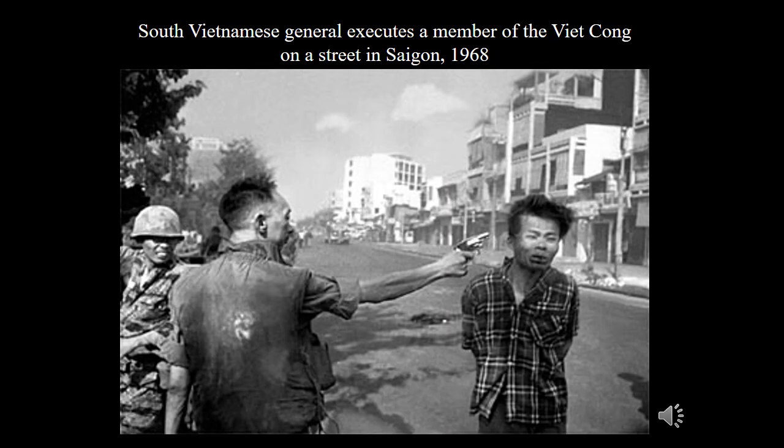Another iconic image shows South Vietnamese General Loan executing a captured member of the Viet Cong in the streets of Saigon in 1968. Not only did the photograph go viral for its brutal representation of close-range execution, but video footage of the execution was also aired internationally. It drew both criticism and justification from viewers and became one of the most controversial images of the entire war.